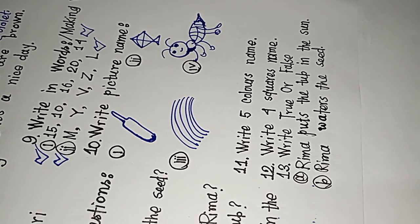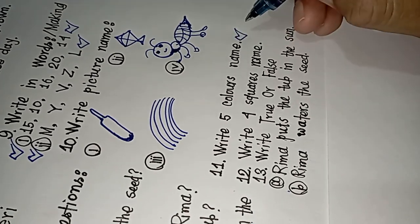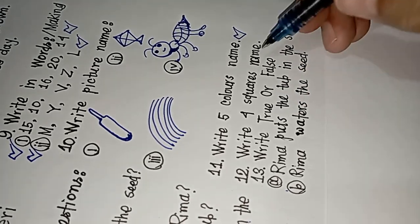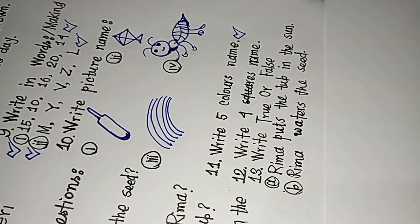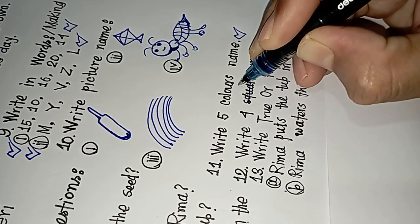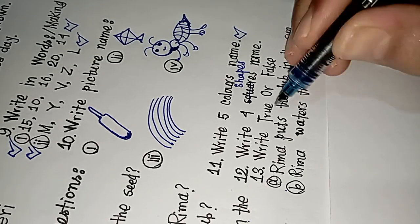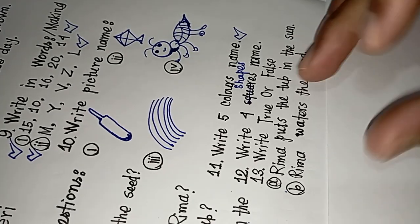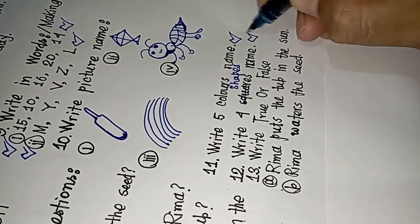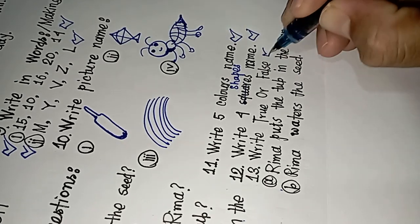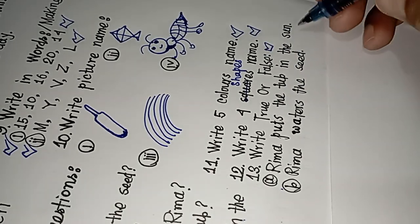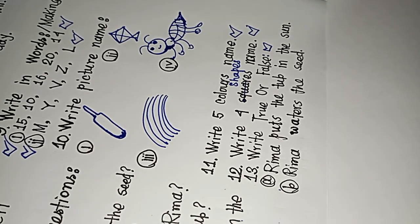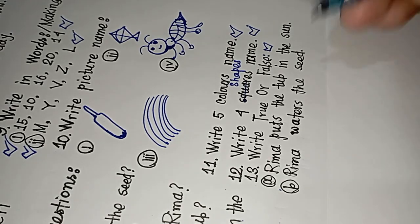So we can see the first one in our video — we can see the number 11 and write 5 colors' names, so we can write the same name as 11, write 4, so we can read this — write 4 chef's name. So the name of the NKR may be written. They will be happy with the petal number. They are being found in influence on the rights of the NKR. It says the rights are true and false. It puts the top in the sun and waters the sheet.